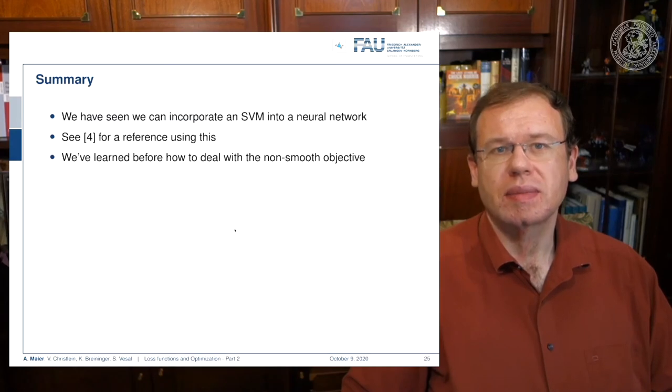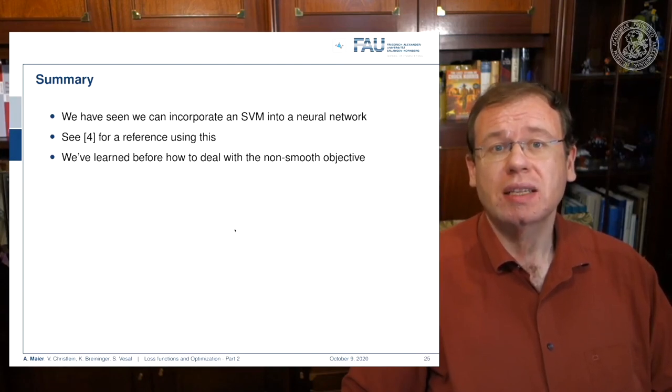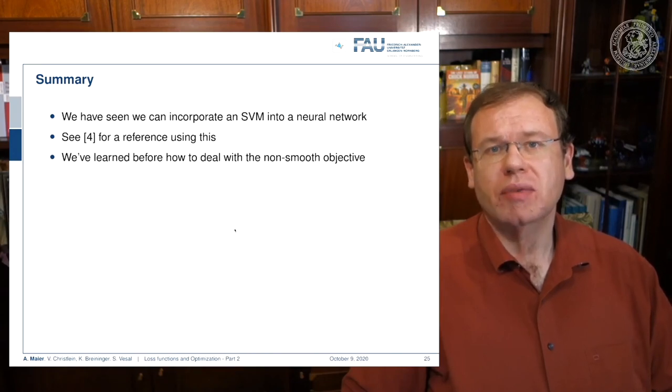So let's summarize this a little bit. We have seen that we can incorporate SVMs into a neural network. We can do this with the hinge loss, which is a loss function that you can use to put in all kinds of constraints. You can even incorporate force choice experiments as a loss function, so this then has been called the user loss. So it's a very flexible function that allows you to formulate all kinds of constraint optimization problems in the framework of deep learning.